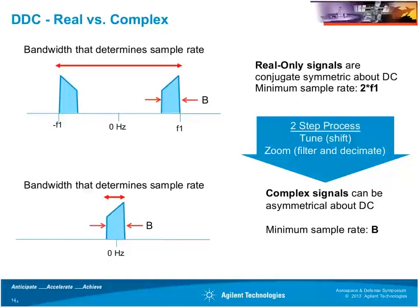Regarding the value of I and Q samples from the tune stage: with real signals, by definition, you must have complex conjugate symmetry of spectral content when computing an FFT around DC. But with complex signals, you only need a minimum sample rate equivalent to the width of the span of the signal around DC once tuned to baseband. Complex signals provide asymmetry around DC and allow minimizing the sample rate to the specific frequency range of interest.